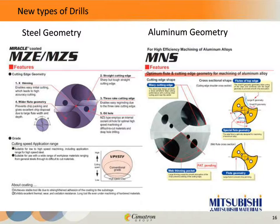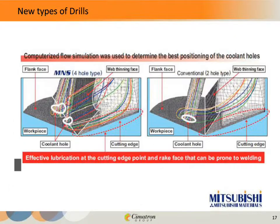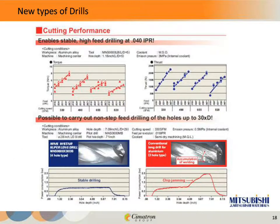I found this slide very interesting. Computerized flow simulation was used to determine the best position of the coolant holes. In this particular drill, there are two coolant holes per flute. The next slide shows that if you can get the coolant holes positioned properly and get the lubrication as it should be, then you won't get aluminum coming up the drill as much. A lot of engineering is going into the design of these tools.